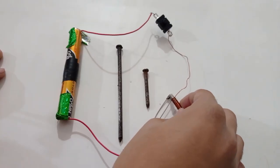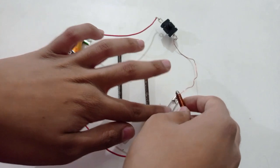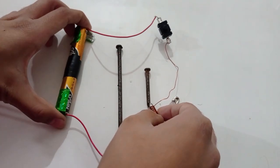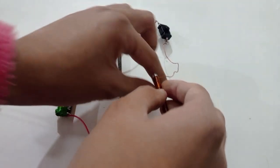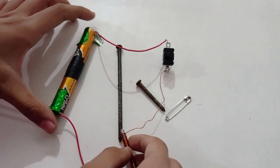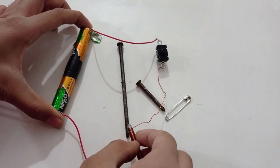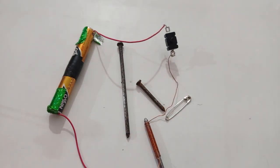This electromagnet can lift lighter objects but not the heavier one. To lift the heavier objects, we need an electromagnet with more strength. There are two ways to achieve that.